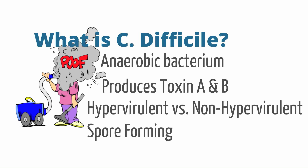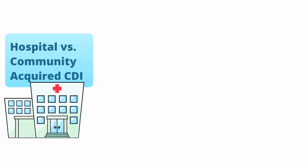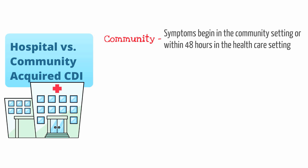General disinfectants cannot kill C. diff spores and really require high concentration bleach products to effectively clean areas covered by C. difficile. Now, C. diff infections can be divided into community, hospital acquired, or indeterminate based on the likely setting a patient contracted C. diff.